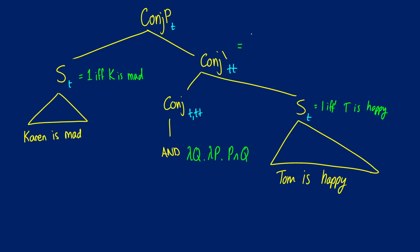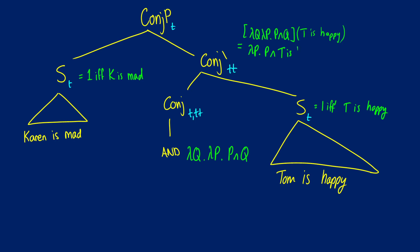At the conjunction bar level, we have lambda Q dot lambda P dot P and Q as the function. We're going to apply 'T is happy' first, so that's going to replace the Q portion. We're going to be left with lambda P dot P and T is happy. When we get up to our conjunction phrase at the next level, we're just applying our leftmost sentence to P.